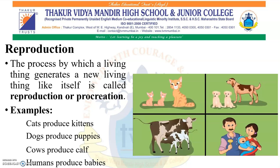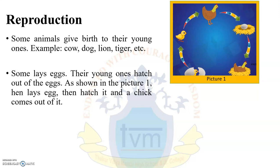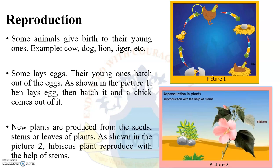Reproduction means to reproduce the same kind of thing. Some animals give birth to their young ones — for example, cow, dog, lion, tiger, etc. Some lay eggs, and their young ones hatch out of the egg; for example, a hen lays eggs and a chick comes out. New plants are produced from seeds, stems, or leaves — for example, the hibiscus plant reproduces with the help of a stem.